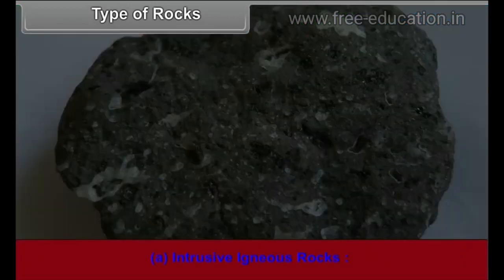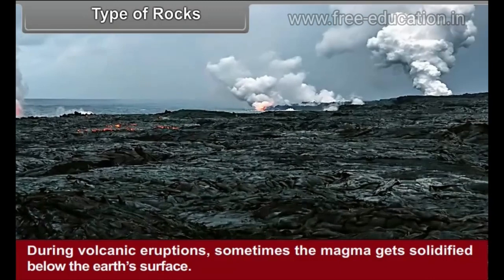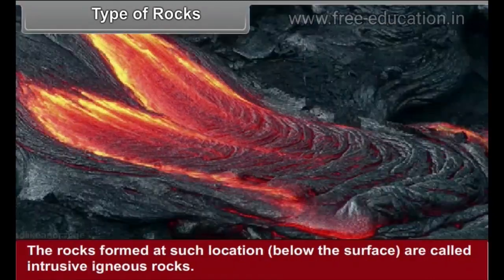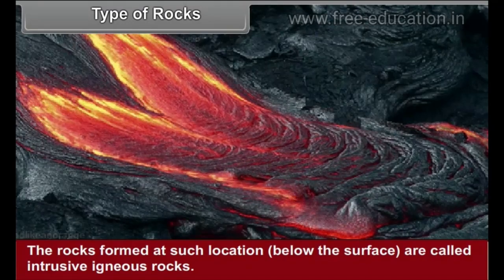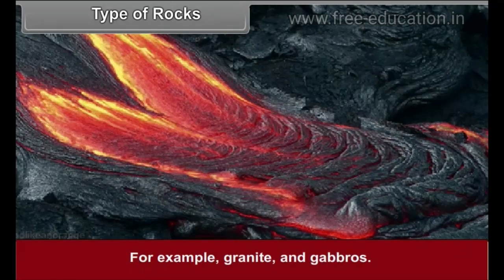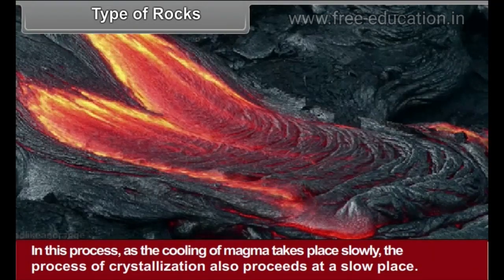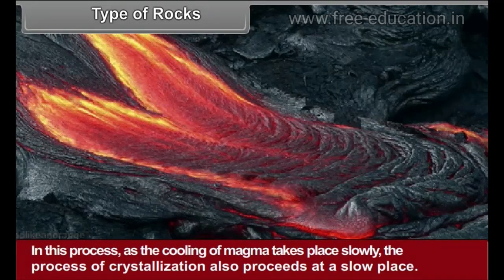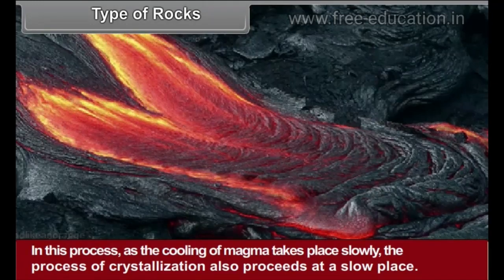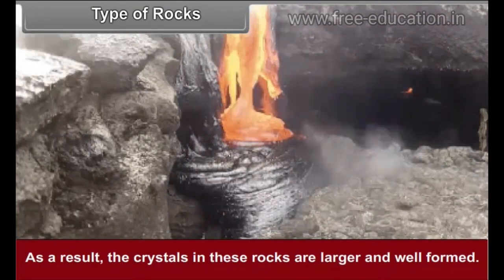Intrusive Igneous Rocks: During volcanic eruptions, sometimes the magma gets solidified below the Earth's surface. The rocks formed at such locations below the surface are called intrusive igneous rocks — for example, granite and gabru. In this process, as the cooling of magma takes place slowly, the process of crystallization also proceeds at a slow pace. As a result, the crystals in these rocks are larger and well formed.